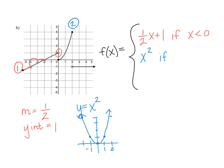Now we fill in the domain for the parabola. The leftmost point is the coordinate (0, 0) and the rightmost point is (2, 4), so we want all x values between 0 and 2. We write this as the compound inequality 0 ≤ x ≤ 2. We include both 0 and 2 because there are closed dots on both endpoints of that parabola.